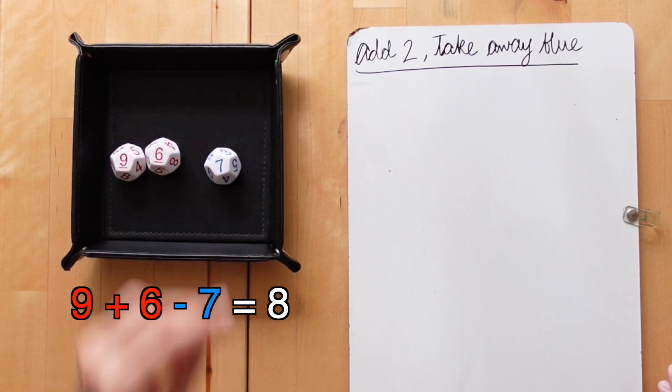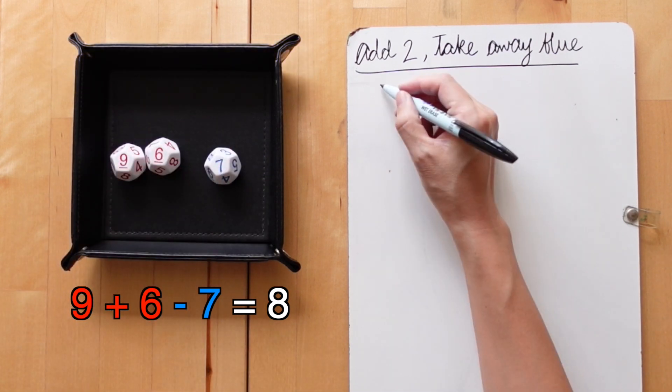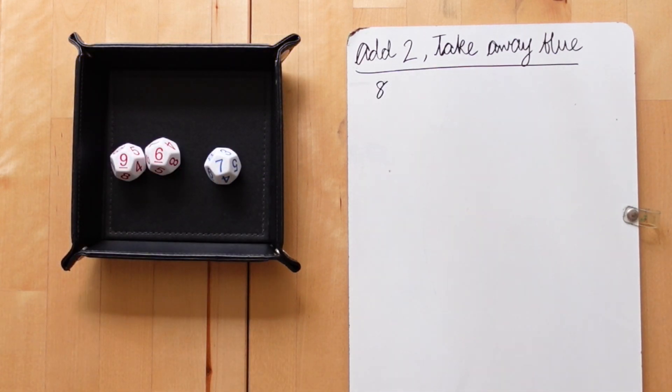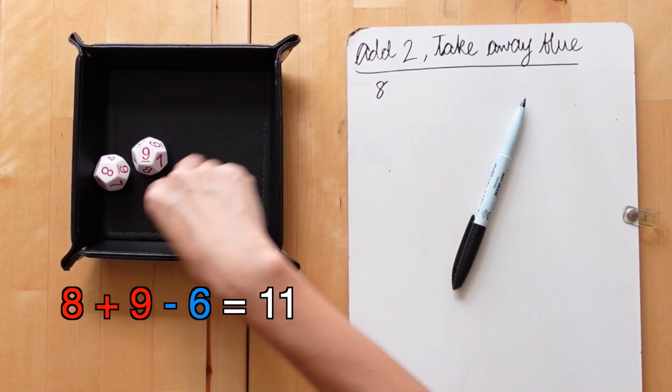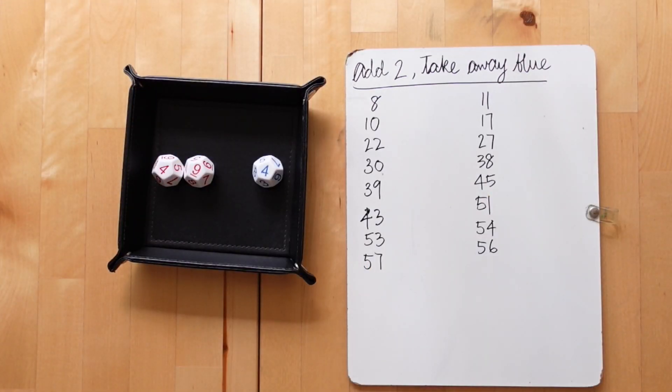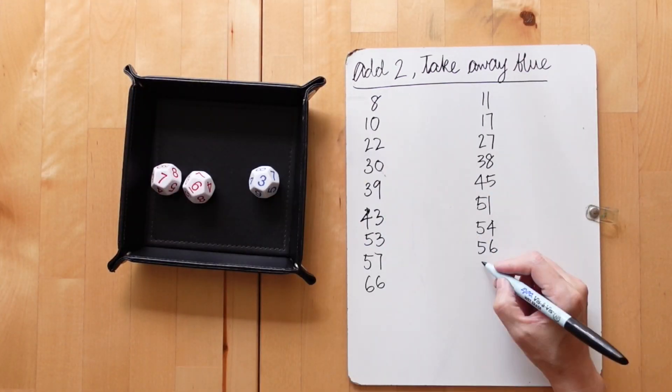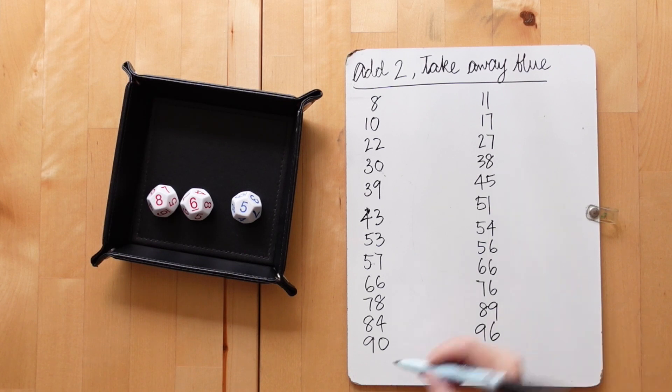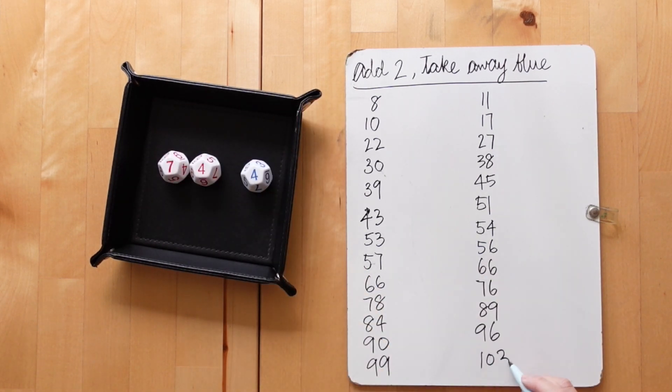For this game, we'll use one blue mean 11 and two red mean 13 dice. The two red dice are added together and then the blue die number is subtracted. And we keep a running score on our math journal and the first one to get to 100 wins.